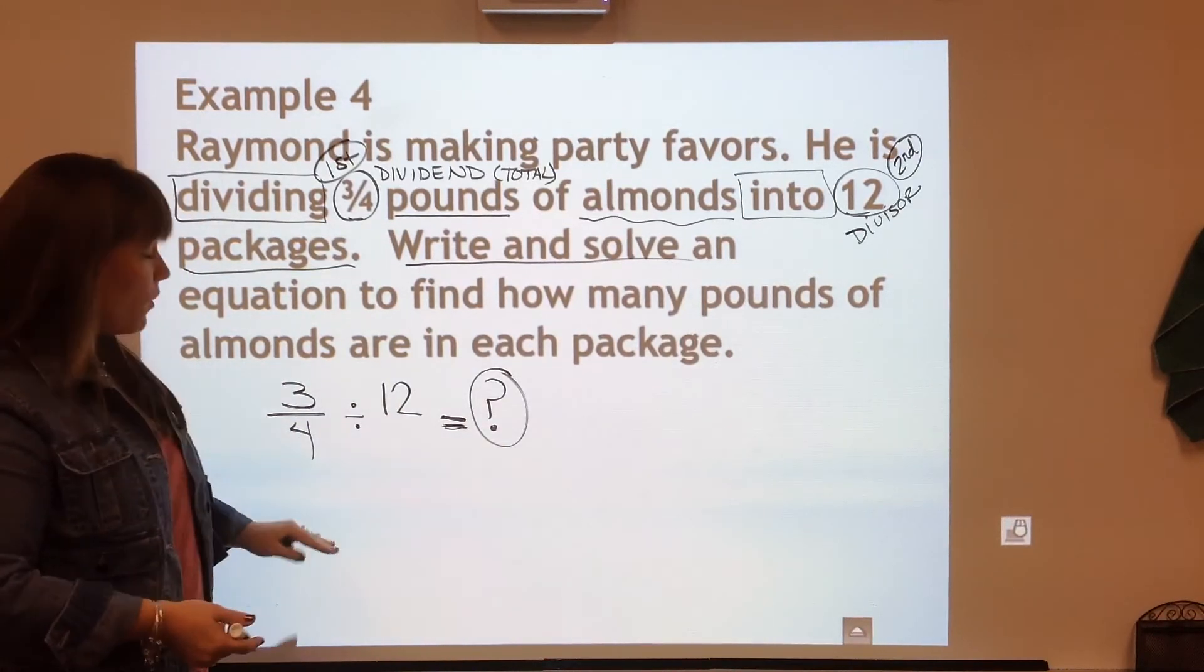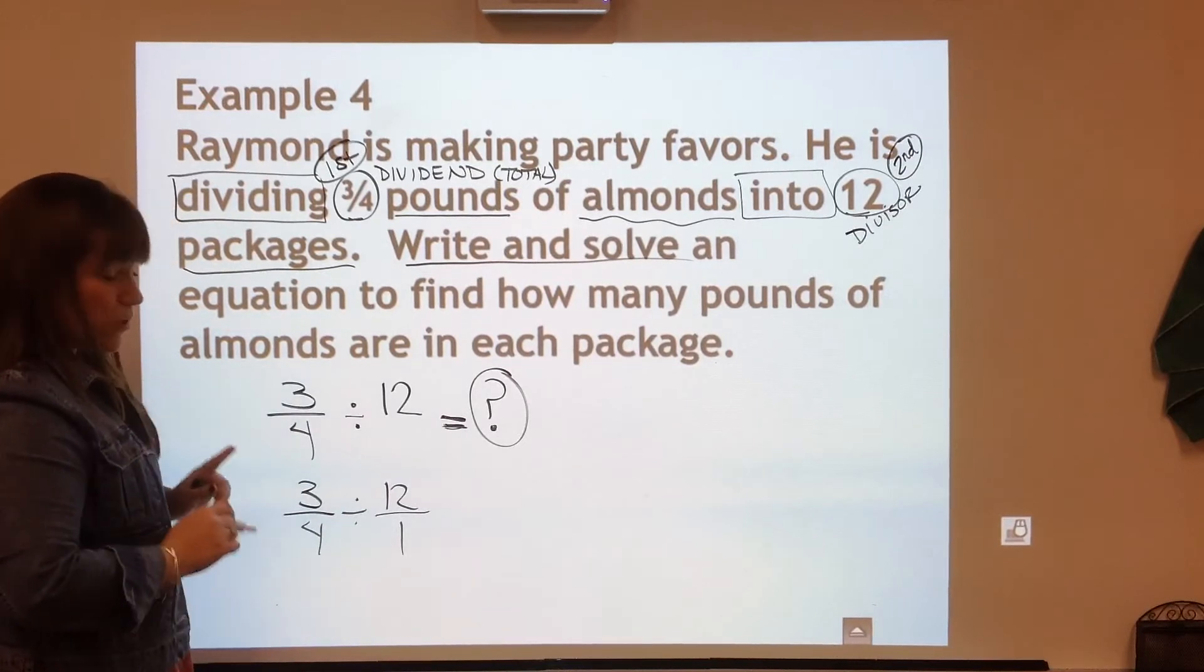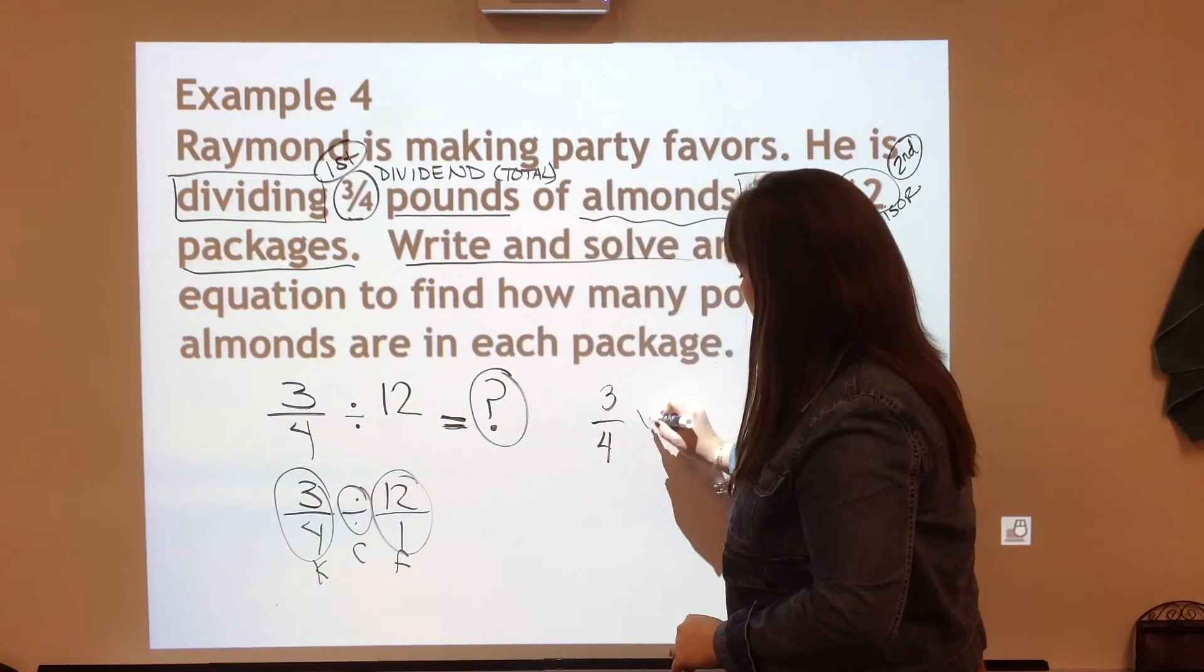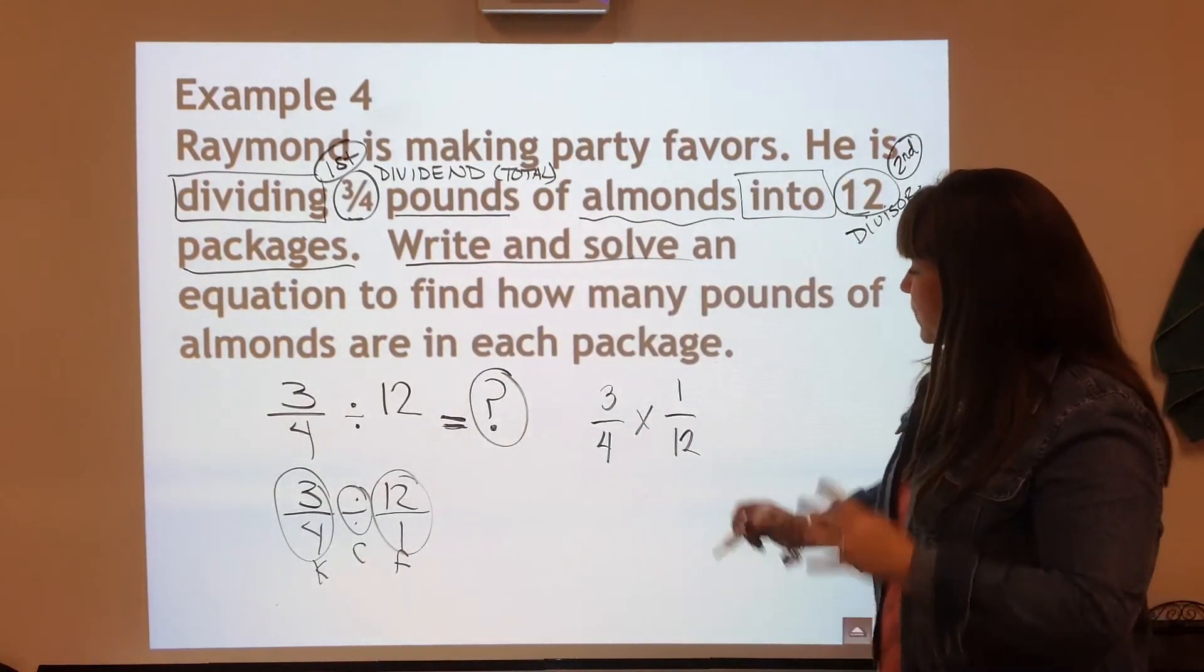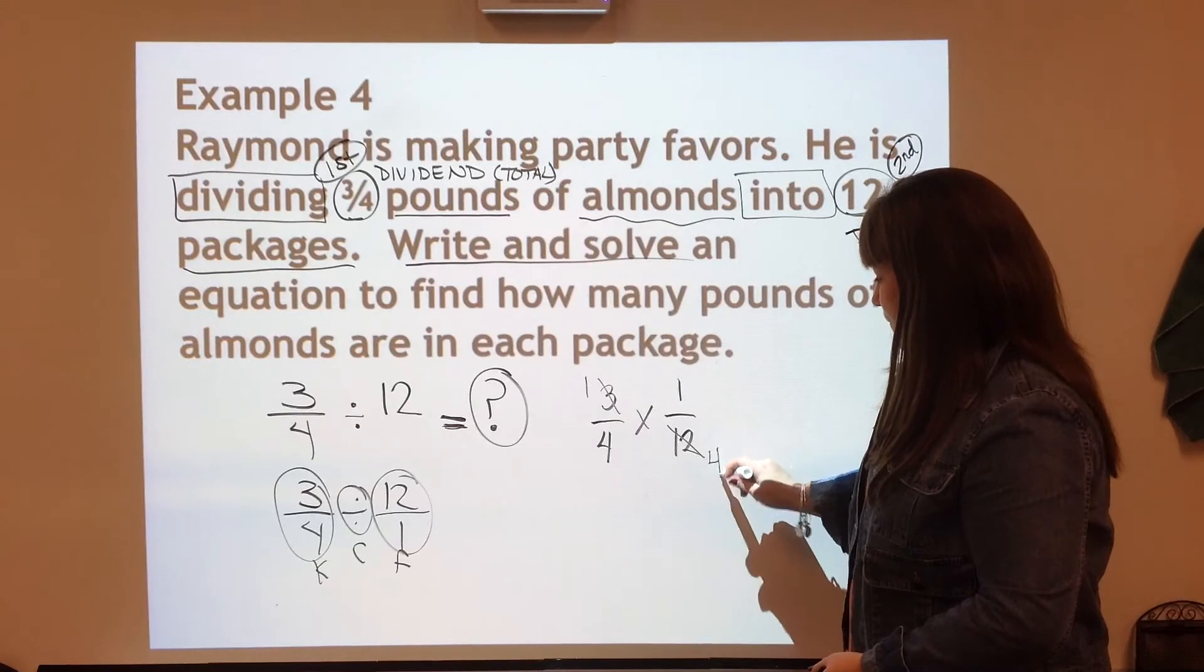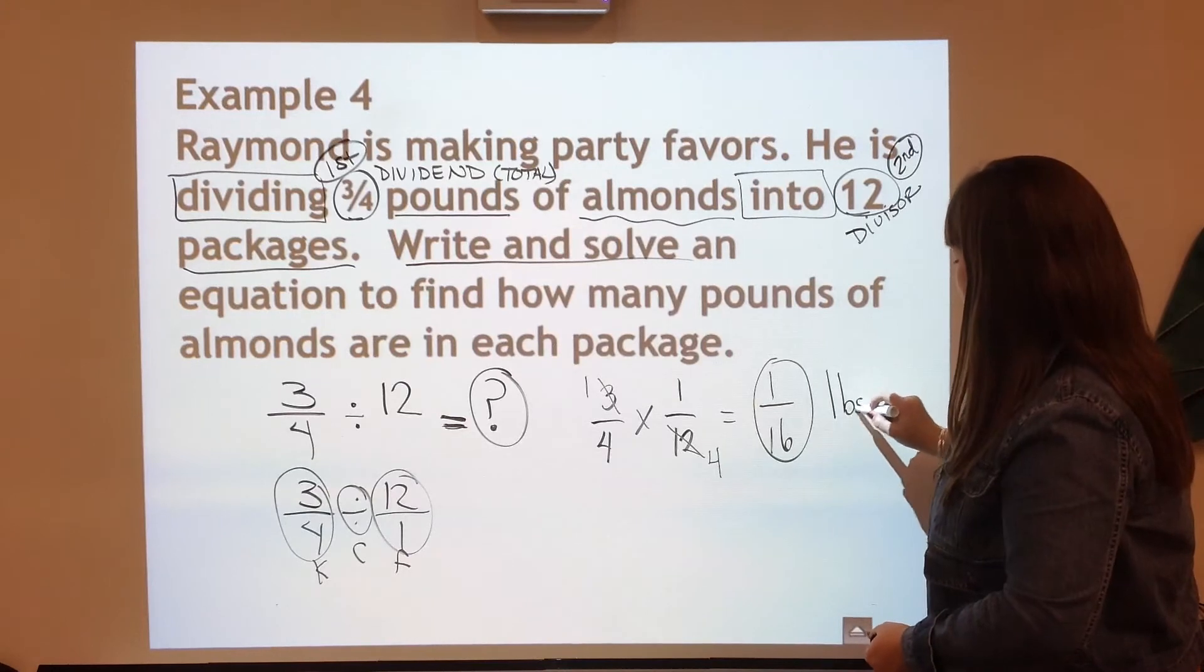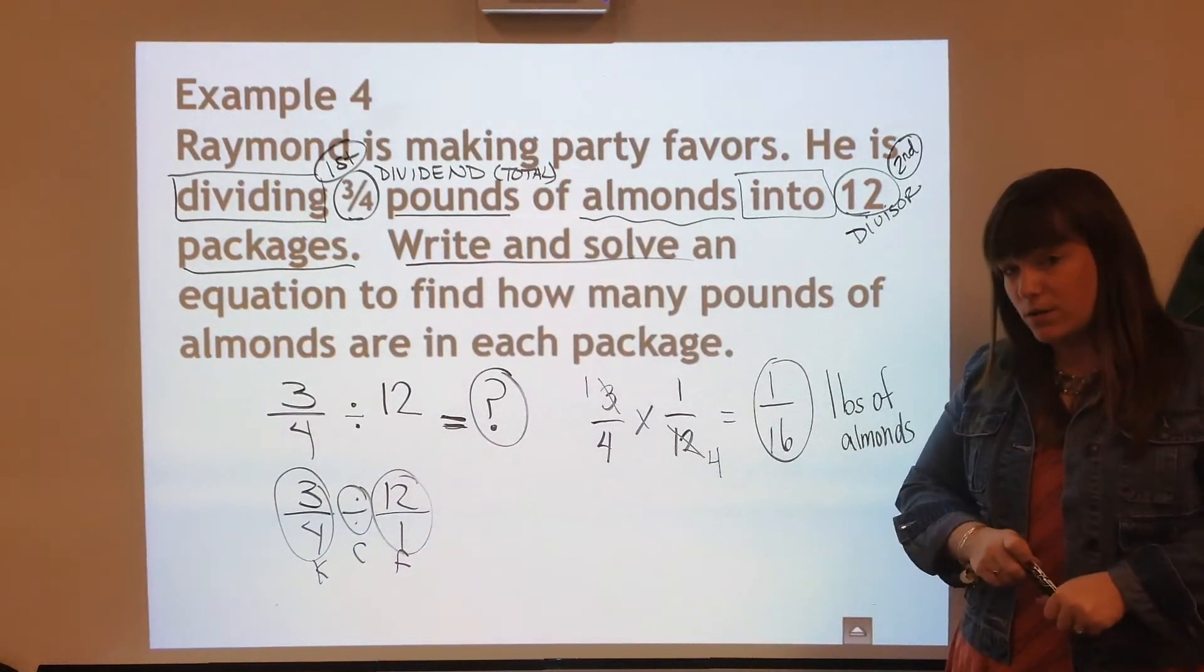We plug in our numbers with our division sign and our equal sign and we are trying to find that answer. So right, done. Now we have to solve. So we're going to first rewrite this division problem with the 12 over 1. Then we're going to keep change flip. So circle, circle, circle, keep, change, flip and over here we have 3/4 that we're keeping. Change it to multiplication and flip and find the reciprocal of 12 which is 1/12. Well, good news is we can do our simplify first trick. Three divided by three. 12 divided by three. And we have our answer of 1/16. We have to add our topic. What is our unit? We're talking about pounds of almonds in each package. So that is our answer for number four or example four.